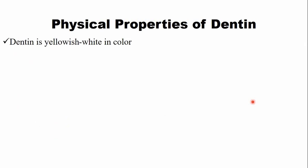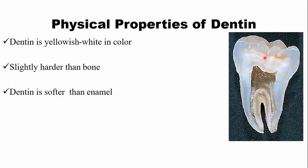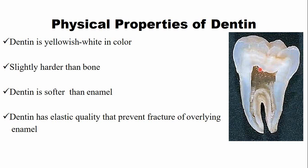Regarding the physical properties of dentine: it is yellowish-white in color, and because enamel is translucent, this color contributes to the overall appearance of the tooth. Dentine is slightly harder than bone but softer than enamel. It also has an elastic quality that prevents crack propagation from the enamel into the dentine, due to the smaller crystal size and the presence of collagen fibers — effectively absorbing forces on the enamel.